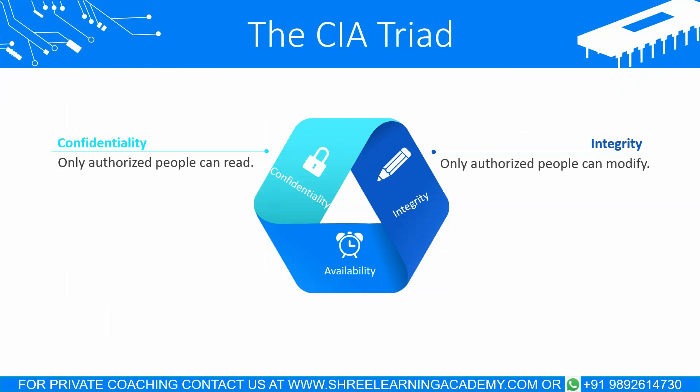Integrity. This implies that the data has not undergone any unauthorized alterations. Prior authorization is required before making any modifications to the data, which serves to preserve its integrity. For instance, if an individual were to deliberately or accidentally delete a crucial file, the integrity of that file would have been breached. Permissions should have been established to prevent such an occurrence.